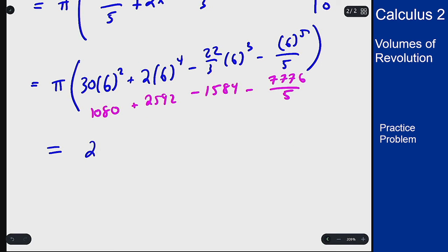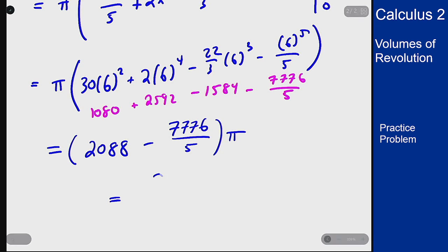Which comes out to 2088 minus 7776 over 5 times pi, or 2664 over 5 pi.